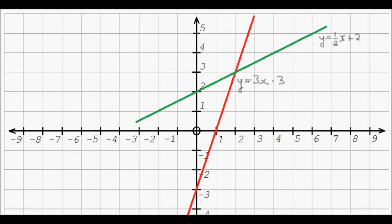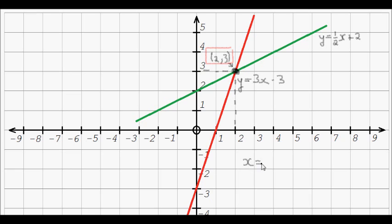Now the solution is where these two equations cross over each other, which is this point here. And we can see that they cross over at the x-coordinate of 2 and the y-coordinate of 3. So that's effectively our solution to this problem. And formally our solution will be x equals 2 and y equals 3.